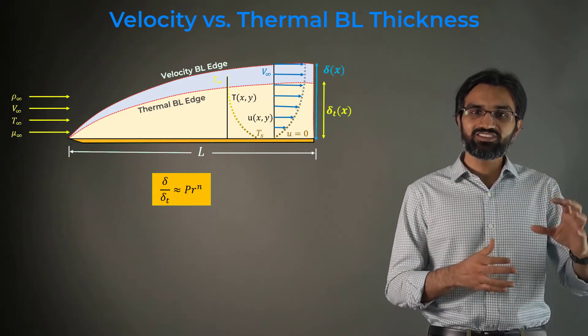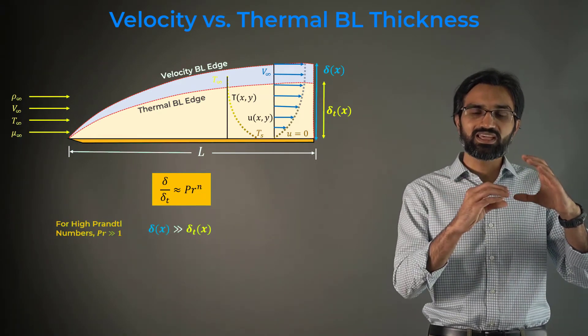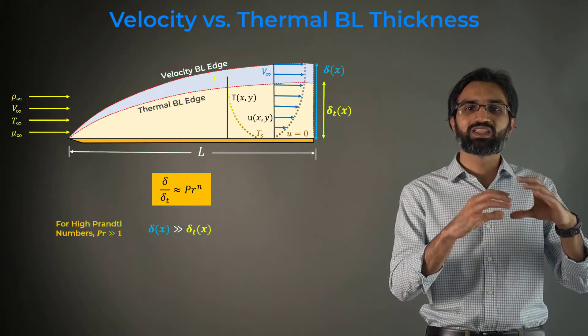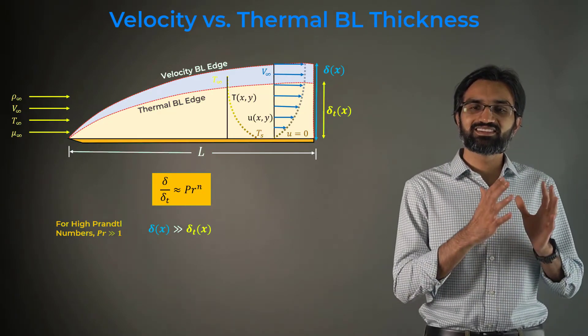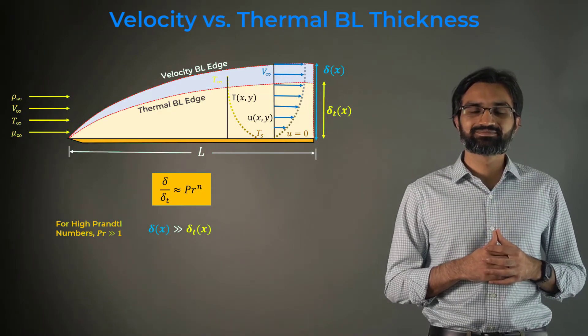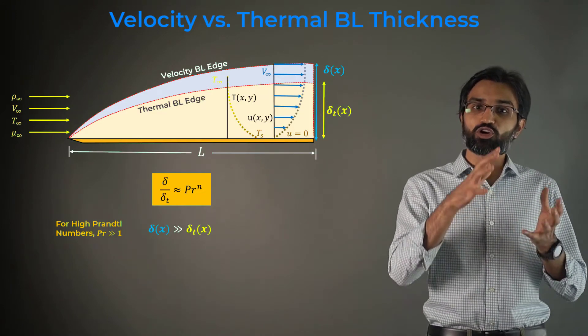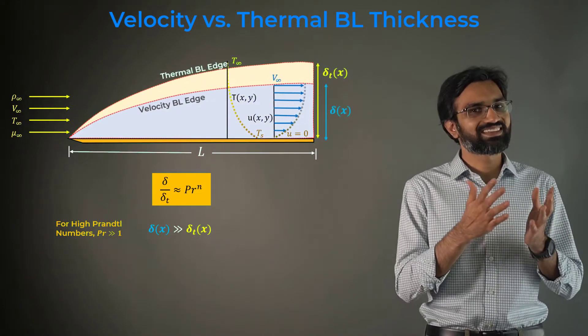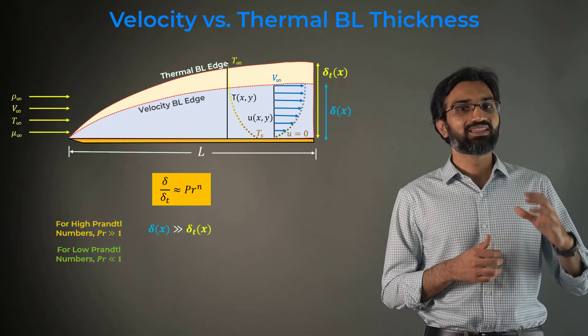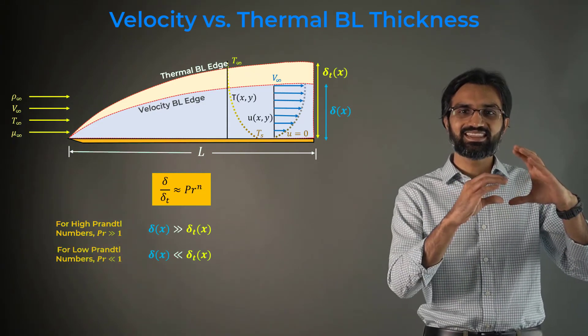This implies that the velocity boundary layer is much thicker than the thermal boundary layer for high Prandtl number fluids such as liquids. On the other hand, for low Prandtl number fluids such as liquid metals, the thermal layer is thicker than the velocity.